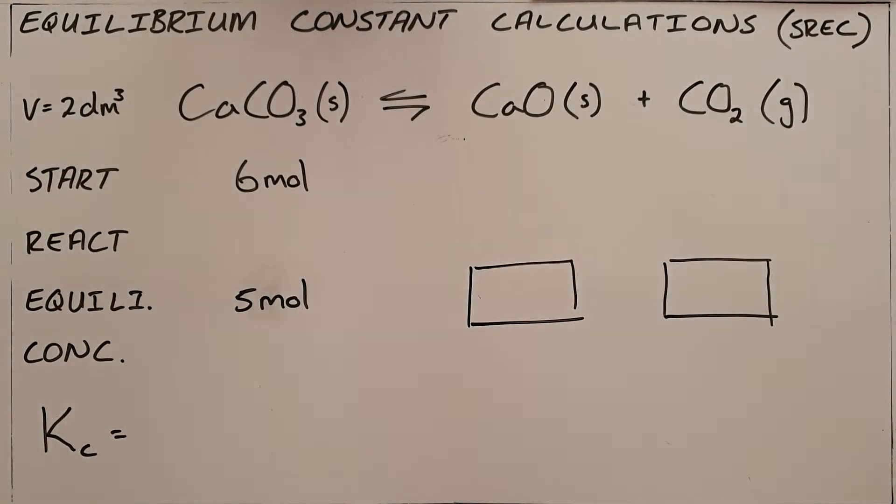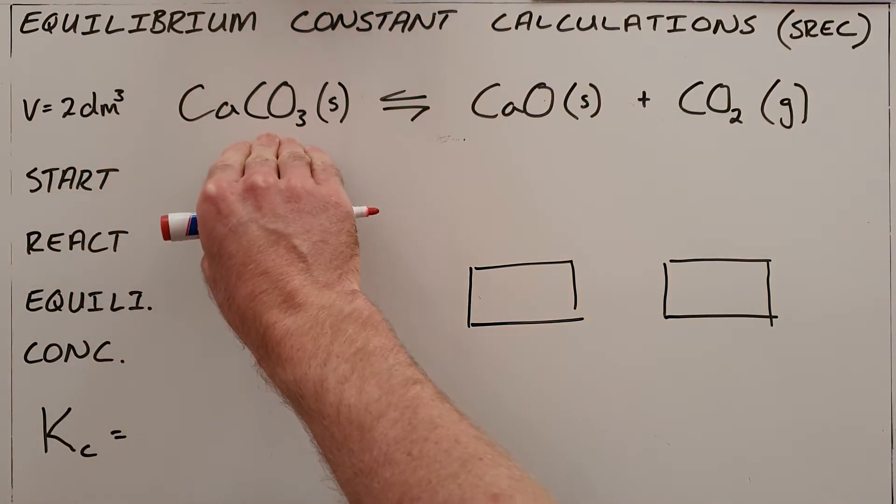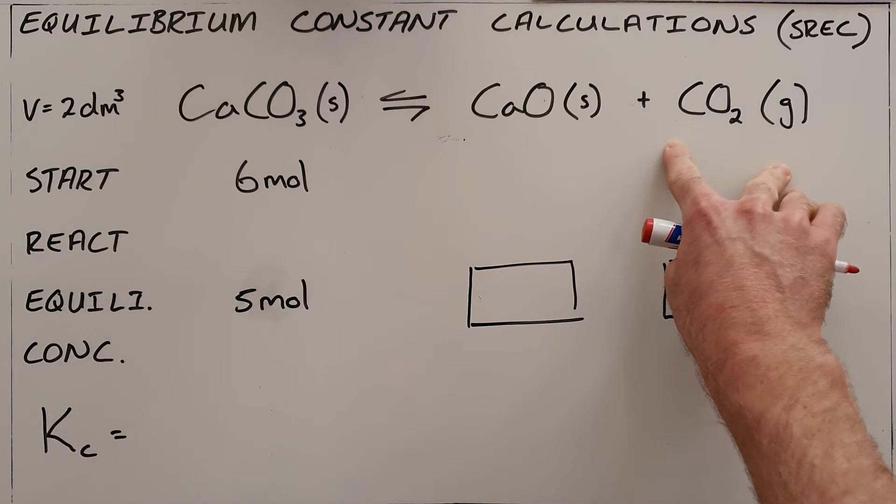In the simple stoichiometric questions that we've done until this point, it was always a case of these are the quantities of reactants that we start with, what quantity of products are formed.